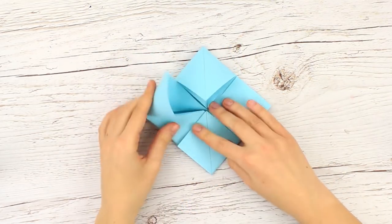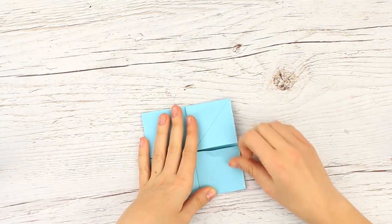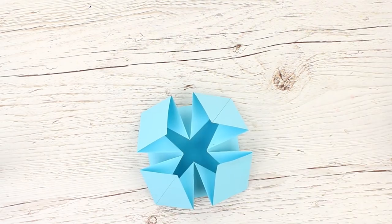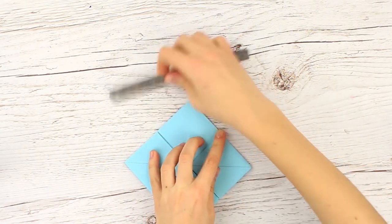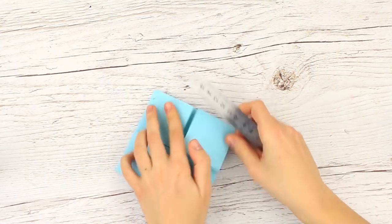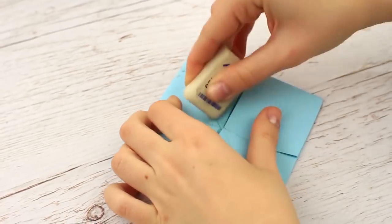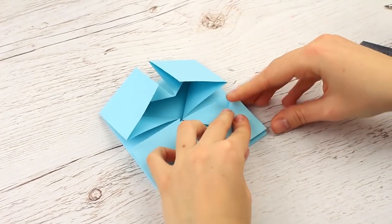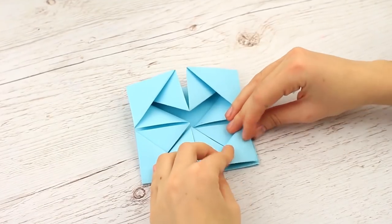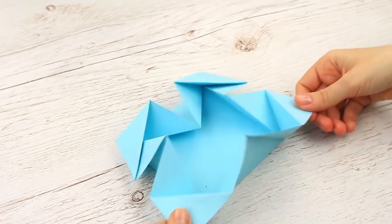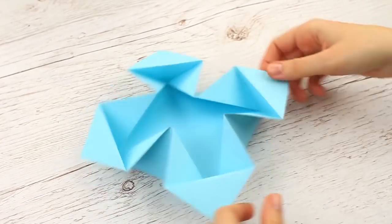Continue folding the other sides in the same way. We should get 4 small squares on the top. The box forms a star when open. Fold the creases with a ruler to keep the shape. Erase the pencil. Fold the corner of each square to the edge to create a flap. This origami box looks untraditional. You can hide some secret gift inside.